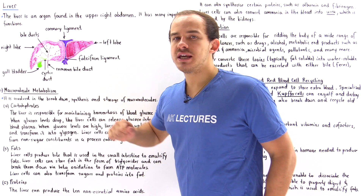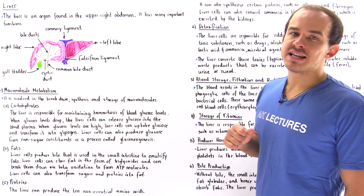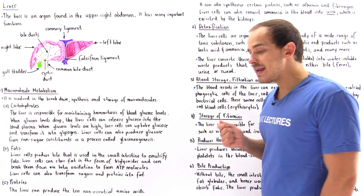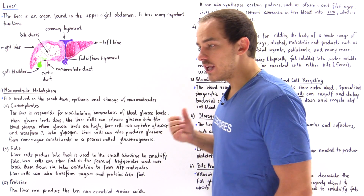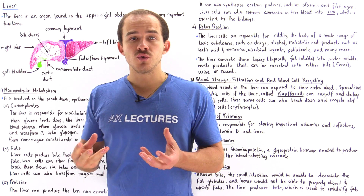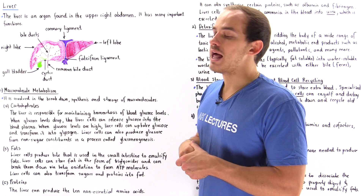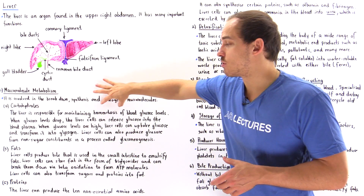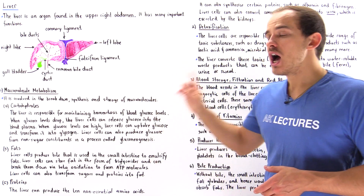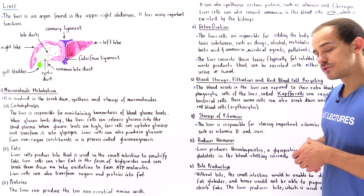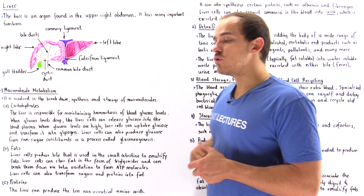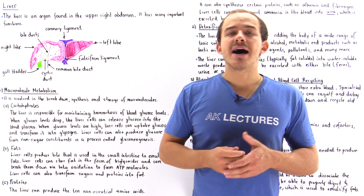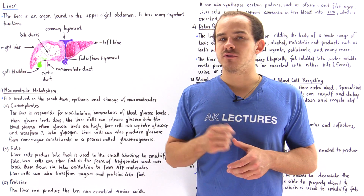Let's begin with carbohydrate metabolism. The liver is responsible for maintaining and controlling the proper levels of glucose inside our blood plasma. Liver cells are responsible for maintaining homeostasis of blood glucose levels. Let's suppose we have a high concentration of glucose in our blood plasma.